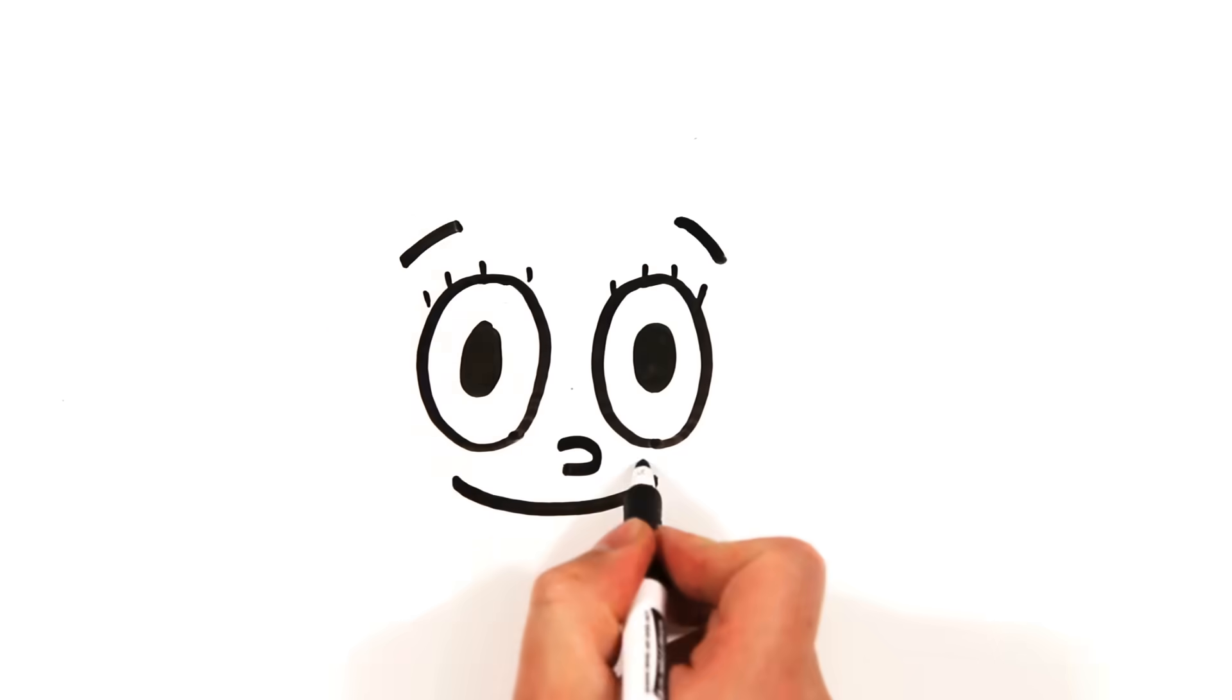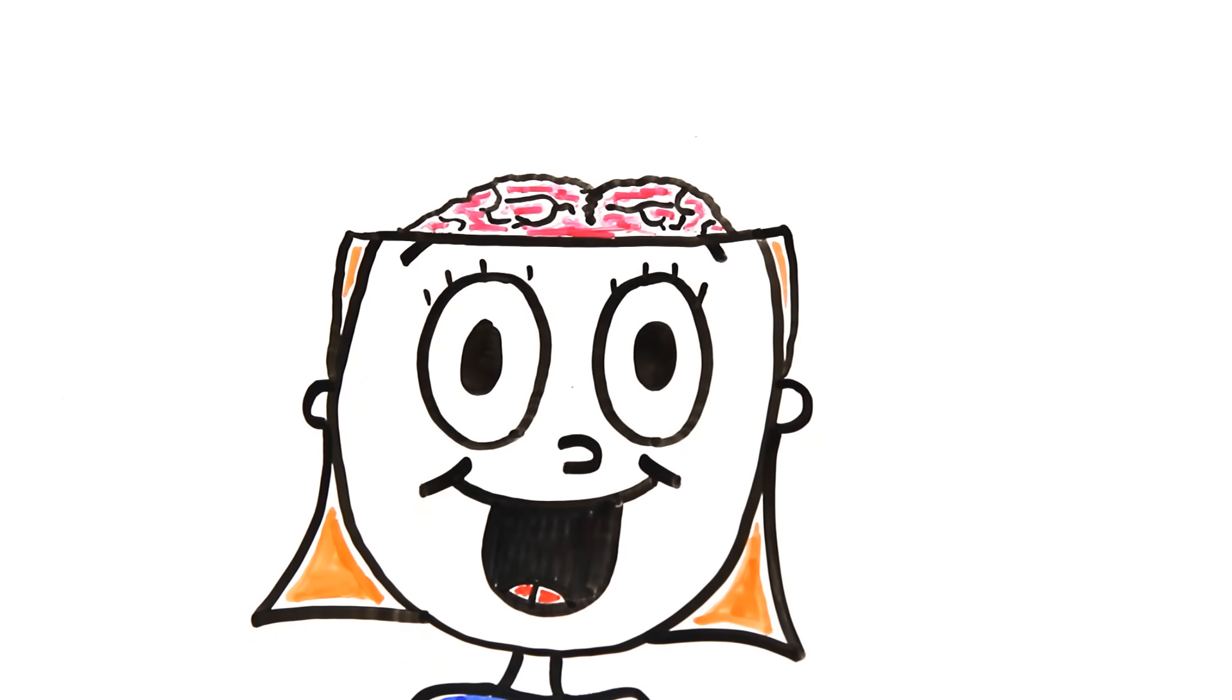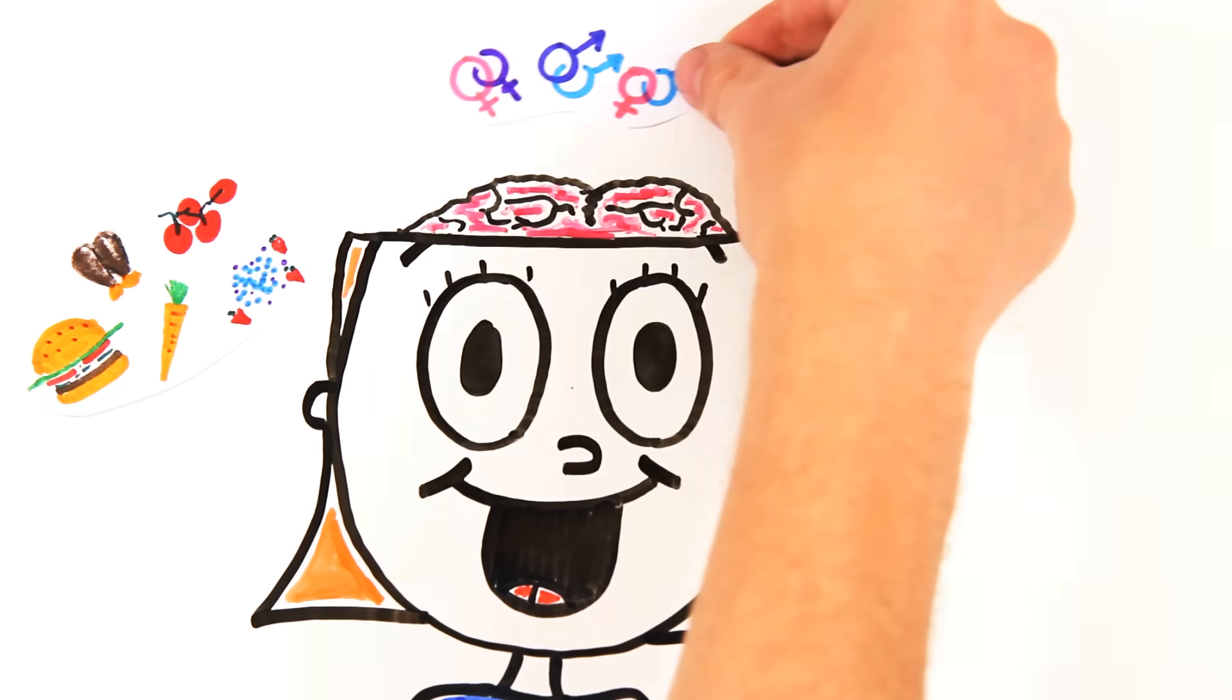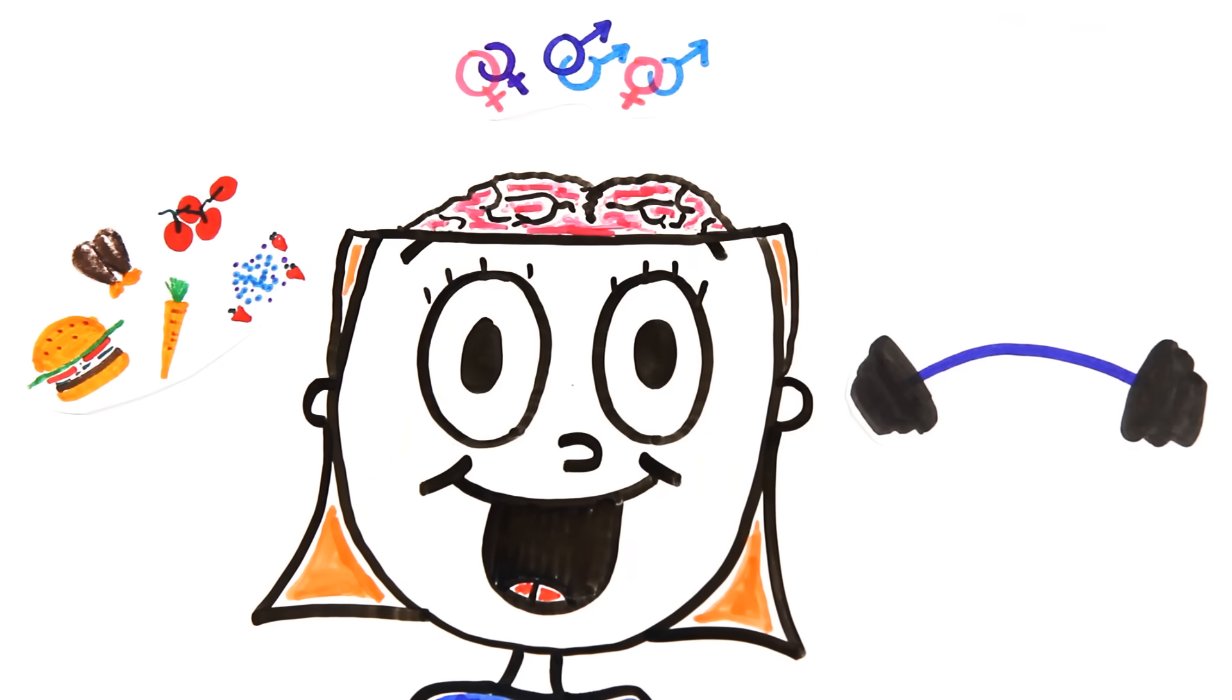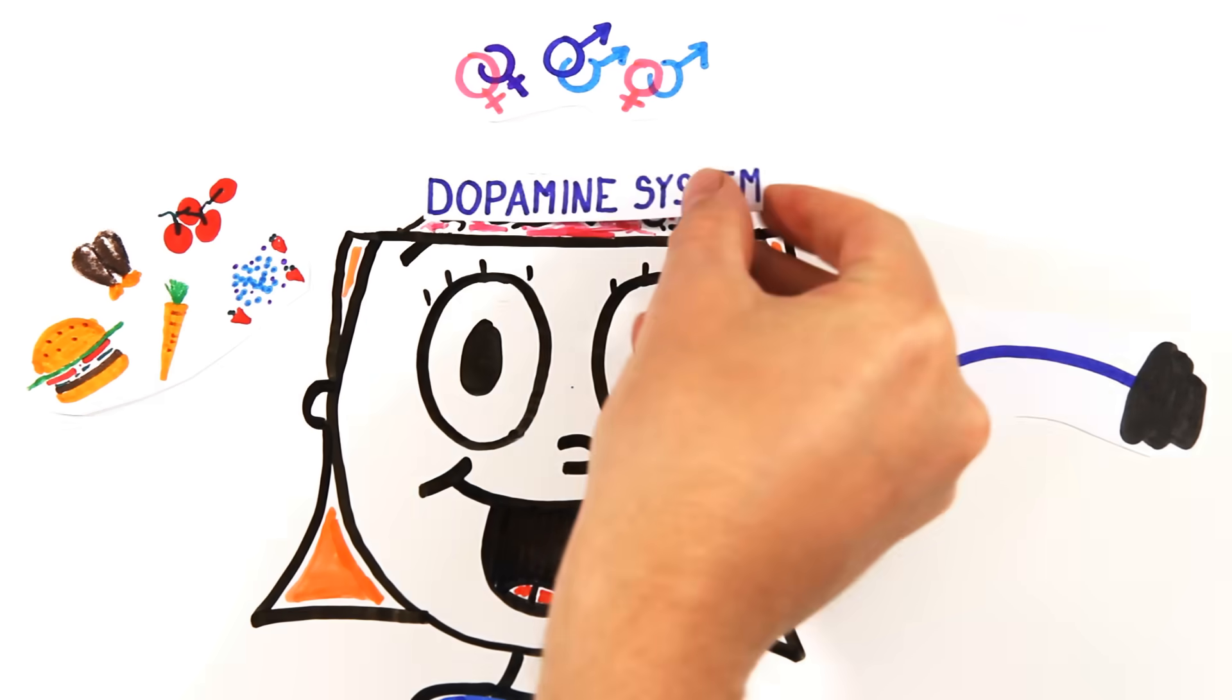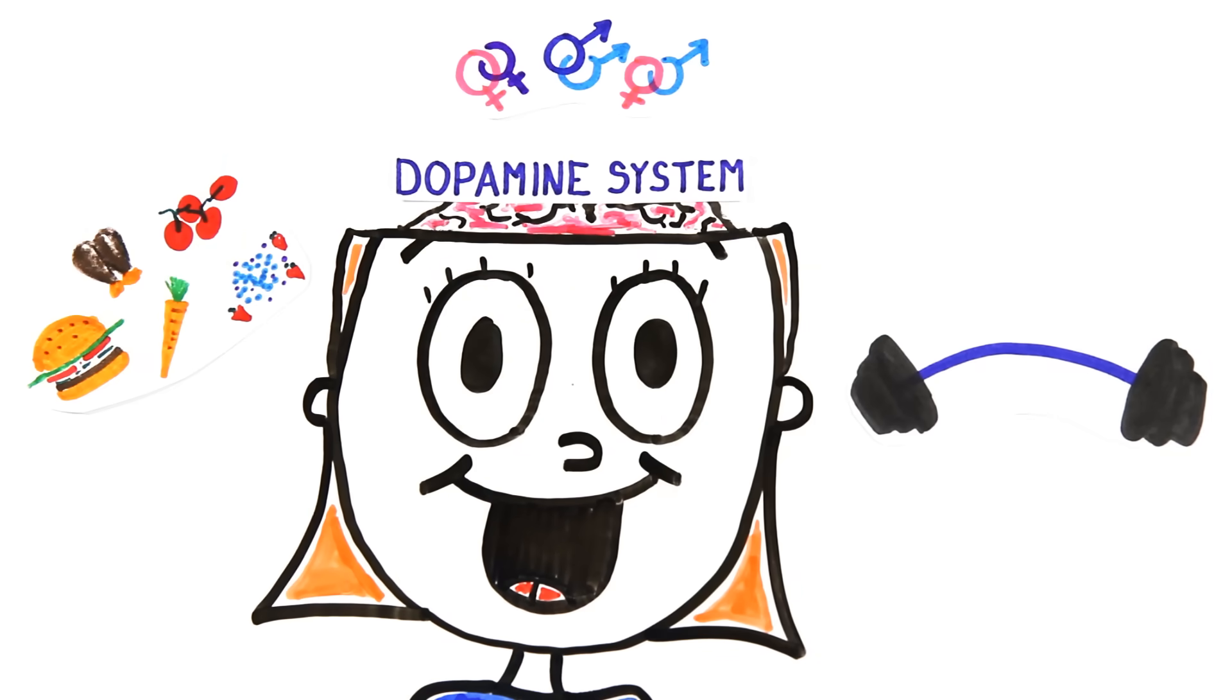Evolution has moulded our brains and bodies to respond positively to natural rewards such as food, sex, and even exercise. Wait, exercise? Yep, the pleasure we experience comes largely from the dopamine system in our brain which conveys these messages throughout the body, ultimately helping to ensure the survival of our species.